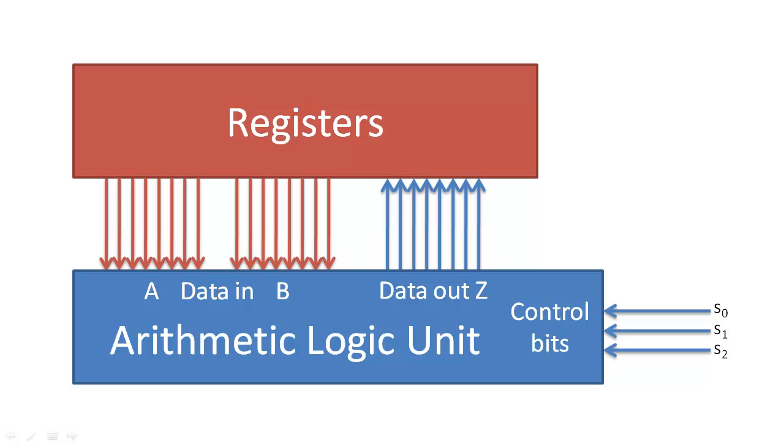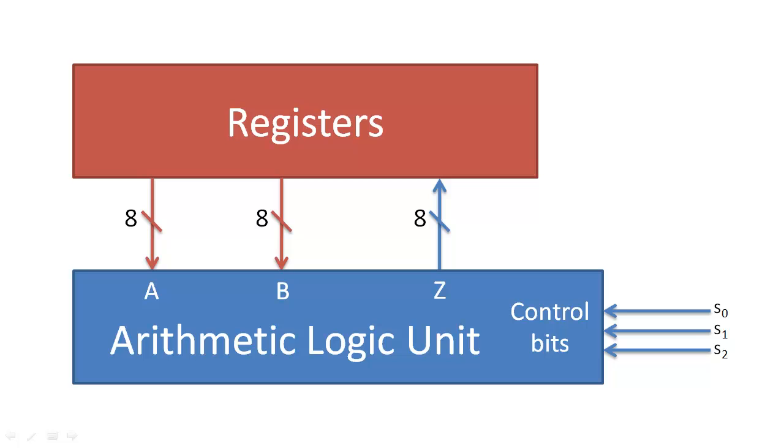To simplify the diagram, we will use a bus notation where we group sets of wires together and indicate how many wires are in that group. Rather than draw three sets of wires, we will simply draw three buses.